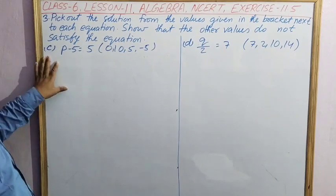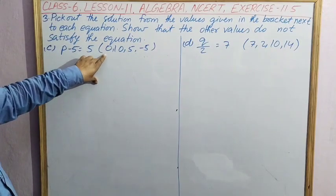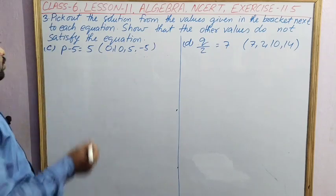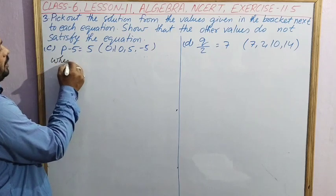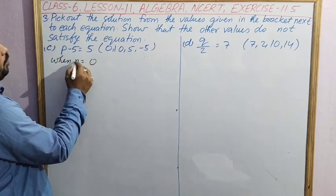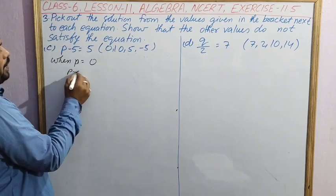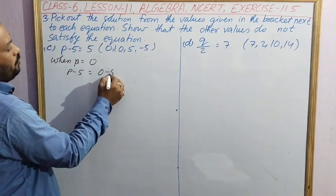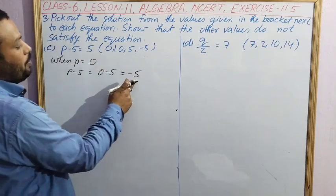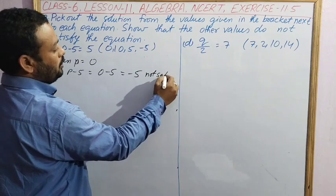In question C, the equation is p minus 5 equal to 5. The values are 0, 10, 5 and minus 5. When p equal to 0, p minus 5, that is 0 minus 5 equal to minus 5. Here the value is 5, but it is coming minus 5. So this one is not satisfying. Not satisfy.